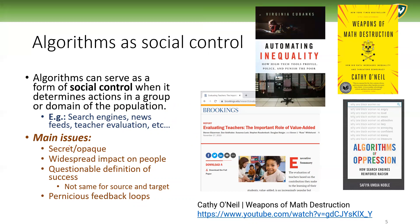There are many issues with these algorithms as they are applied broadly to the population. First, they're secret and opaque. If individuals knew how they were being controlled, they might even agree with it — because the sites may be giving good information, or the assessment may be telling you what you need to focus on and improve. But the problem is that they are secret and opaque, and we don't know what they're doing — what characteristics they are considering or what criteria they are using to evaluate us. That's a big problem.